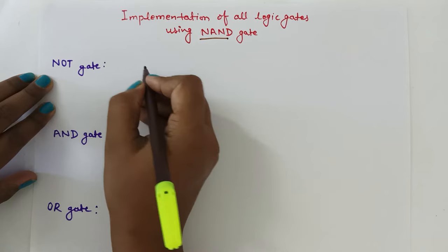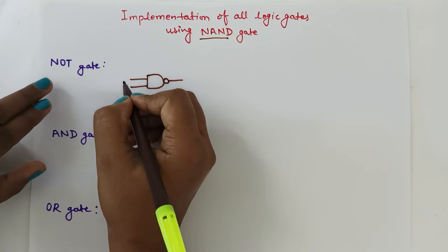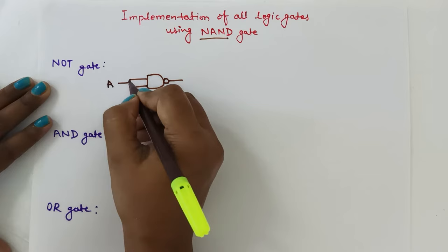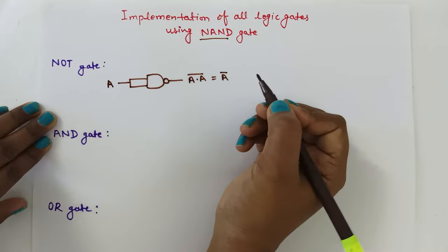For designing NOT gate, we take one NAND gate. We know this is the symbol of NAND gate. In NOT gate only one input is there, so we take one input — that means both the inputs are the same. Here we will get the output as A dot A bar, that means A bar. So this is inverting the input.